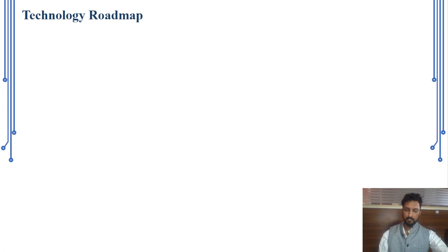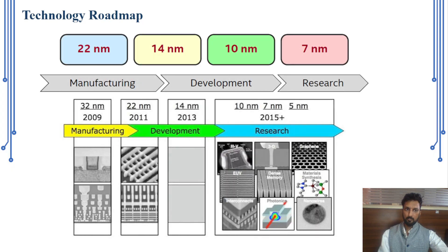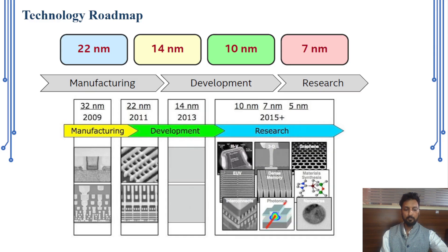How do we integrate so many transistors onto an IC? This depends on the technology roadmap. Initially there was 22-nanometer technology, then 14 nanometers, and nowadays around 10 nanometers. Your mobile phone or laptop is likely built on 10-nanometer technology. The next technologies — 7 nanometer and 5 nanometer — are currently in research and will soon appear in mobile and laptop devices.